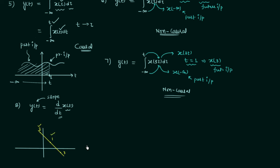Now let's move to the homework problems — there are three. In the first, y(t) equals the integration from minus infinity to 2t of x(τ/2)dτ. In the second, y(t) equals the integration from minus infinity to t of x(τ-1)dτ. In the third, y(t) equals the integration from minus infinity to 2t of x(τ)dτ. Find out whether each system is causal or non-causal, and post your answers in the comment section. See you in the next lecture.